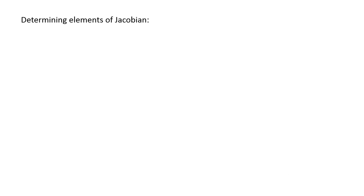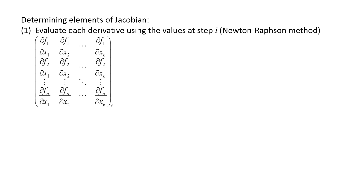There are a couple of methods for determining the elements of the Jacobian. The first method involves determining an expression for each partial derivative and evaluating those expressions at each step. For example, if f1 is equal to x1 squared times x2 squared minus x3, then the partial derivative of f1 with respect to x2 is equal to 2 x1 squared times x2. This function would then be evaluated using the current values of x1 and x2. While this method is straightforward to implement, you would need to determine expressions for all the partial derivatives, which can be very time-consuming for large systems of equations or complicated functions. This method is often referred to as the Newton-Raphson method.